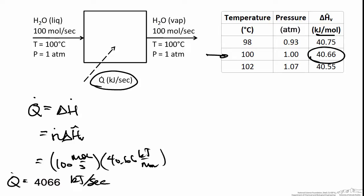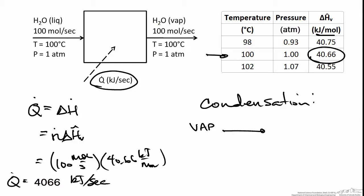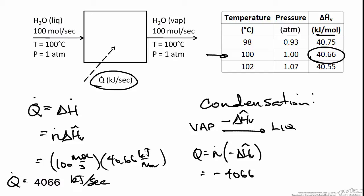For the second part of the problem, we calculate the latent heat to condense 100 moles per second at the same temperature and pressure — which is simpler than it looks. You will not find a heat of condensation tabulated in thermodynamic textbooks. Condensation is the exact opposite of the vaporization process. Since specific enthalpy is a state function — depending only on initial and final conditions — reversing the process reverses the sign. So the heat of condensation equals the negative of the heat of vaporization at the same temperature and pressure, giving negative 4066 kilojoules per second.